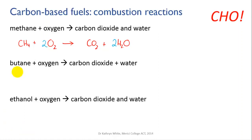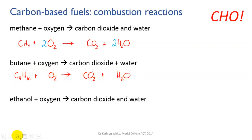Let's try butane. Butane is the fuel used in lighters and sometimes to fire barbecues, and its formula is C₄H₁₀. Again we burn it in oxygen and it produces carbon dioxide and water. CHO — carbons first: four carbons on the left and only one on the right, so we need four carbon dioxides. H next: we've got ten hydrogens on the left and only two on the right, so we need five water molecules to use up those ten hydrogens.